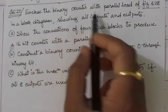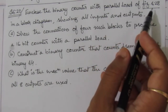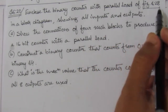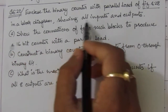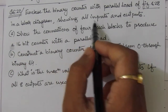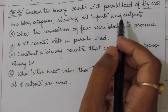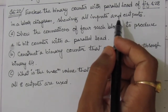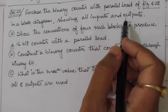The problem is to enclose the binary counter with parallel load of figure 6.28. That means the circuit of figure 6.28 — we have to enclose it in a block diagram and then show all the inputs and outputs. We need not show the internal circuit of the block, just show a block with its inputs and outputs.